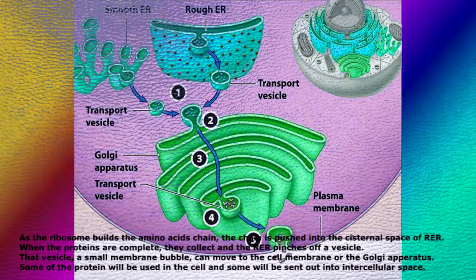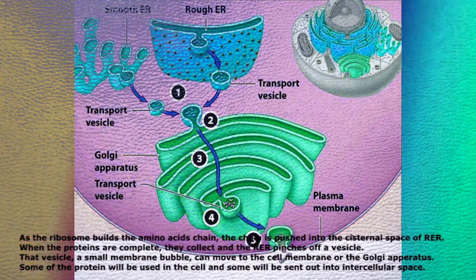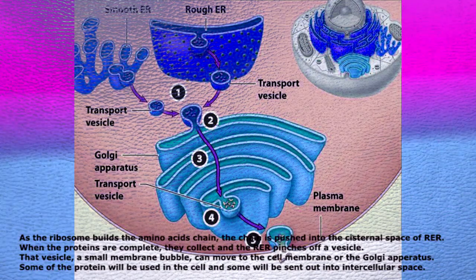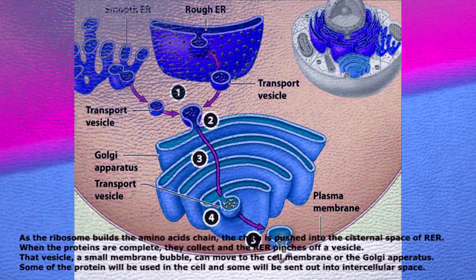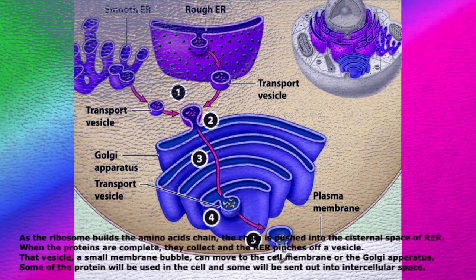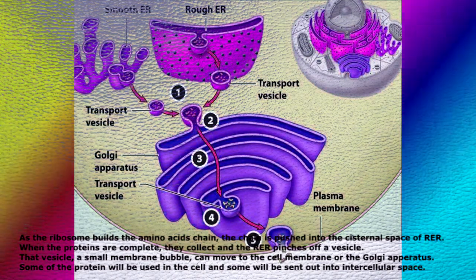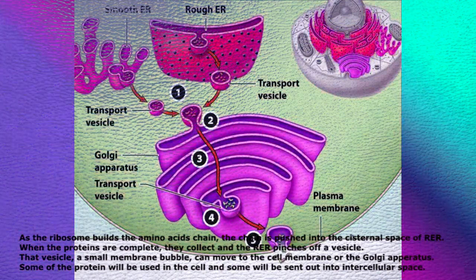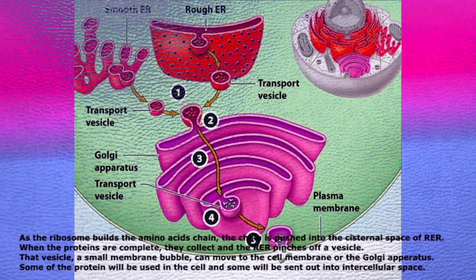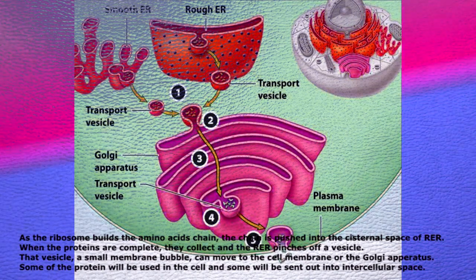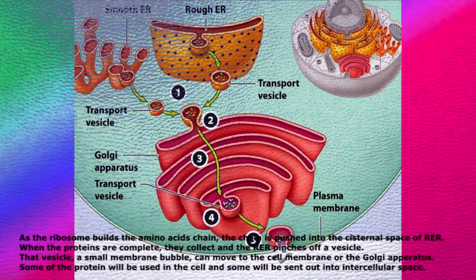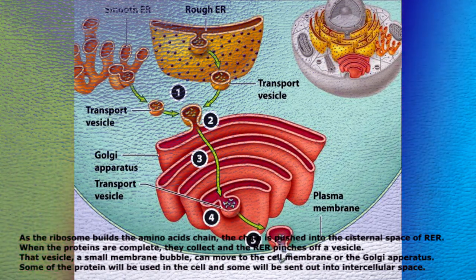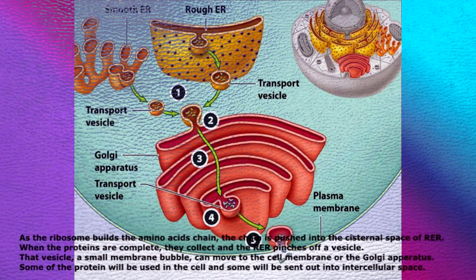As the ribosome builds the amino acid chain, the chain is pushed into the cisternal space of RER. When the proteins are complete, they collect, and the RER pinches off a vesicle — a small membrane bubble — that can move to the cell membrane or the Golgi apparatus. Some of the protein will be used in the cell, and some will be sent out into intercellular space.